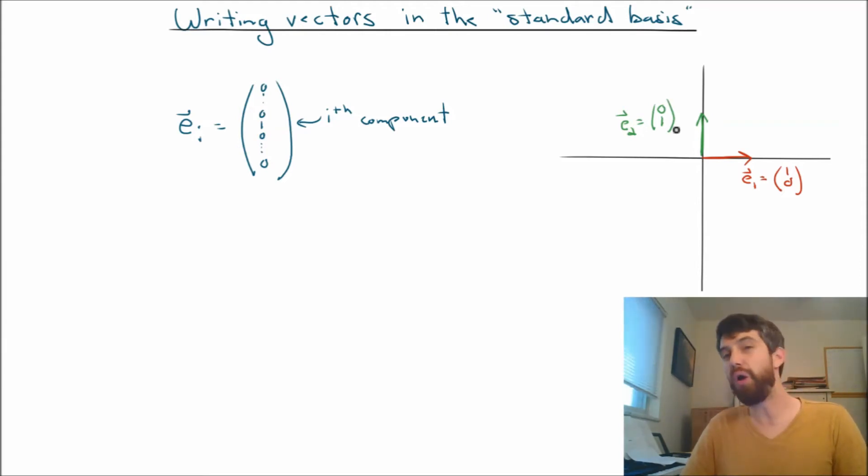By the way, we might have called e1 i-hat before and e2 j-hat before. But if I'm thinking about n dimensions, then I'm going to call the e_i's, where i could be between 1 and n, my so-called standard basis vectors. We don't even really know what a basis is yet, so I'm kind of jumping ahead on the nomenclature, but that is their name.